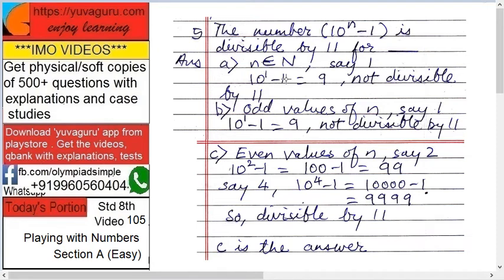Let's try with one example: 10 raised to 1 minus 1, that is 10 minus 1 equals 9. Is 9 divisible by 11? No, so A is wrong. Now for B, odd values of n means 10 raised to 1, 3, 5, 7...